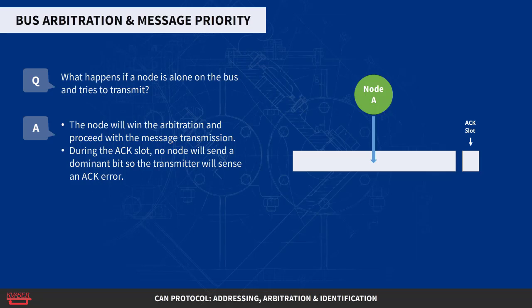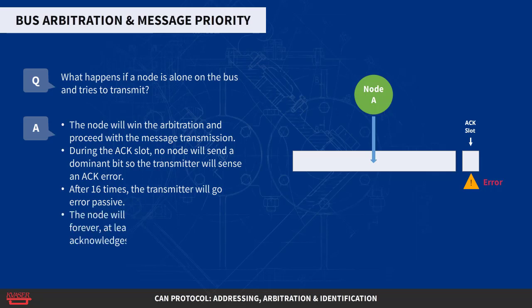So the transmitter will sense an ACK error, send an error flag, increase its transmit error counter by 8, and start a retransmission. This will happen 16 times, then the transmitter will go error passive. By a special rule in the error confinement algorithm, the transmit error counter is not further increased if the node is error passive and the error is an ACK error. So the node will continue to transmit forever, at least until somebody acknowledges the message.